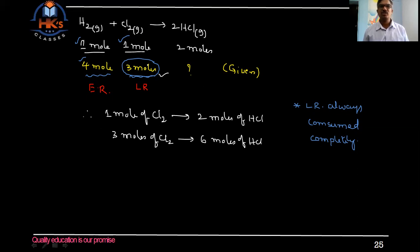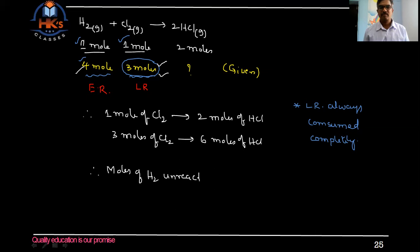You may wonder why hydrogen is called the excess reagent. These two reactants are in a 1:1 molar ratio, meaning three moles of Cl₂ completely reacts with three moles of hydrogen. But how many moles of hydrogen were given? Four moles. Therefore, the moles of hydrogen unreacted will be four moles given minus three moles reacted, which equals one mole unreacted. So hydrogen is the excess reagent.